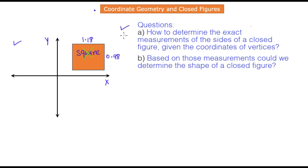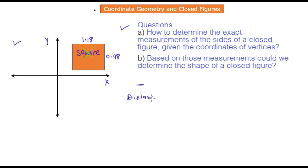That is precisely what we want to discuss today. Given any object — any polygon or circle — using coordinate geometry principles, how would you determine the exact measurement of the sides, assuming you have been given the coordinates of the vertices? And once you know the distances, how would you tell whether that shape is a quadrilateral or a circle, and if it is a quadrilateral, what kind?